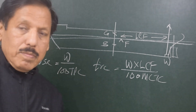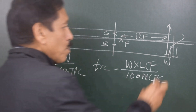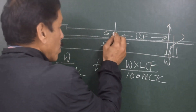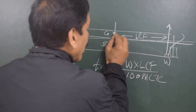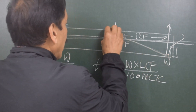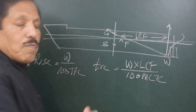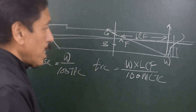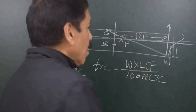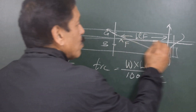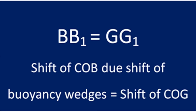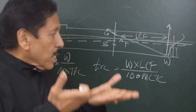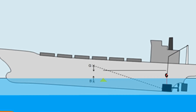We are discharging from a position aft, so G will have a tendency to shift forward — G shifts upward and forward. Whatever is the forward shift of G is compensated by the new underwater volume of the ship, whereby the buoyancy wedge shifts accordingly. The result of discharging the weight from aft: there is a change of trim towards forward, a reduction of draft, and reduction of underwater volume.